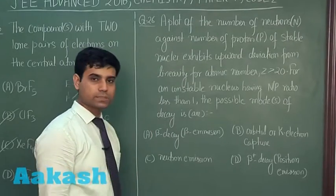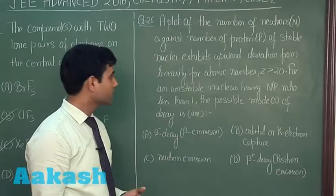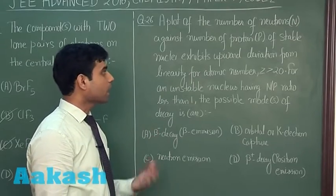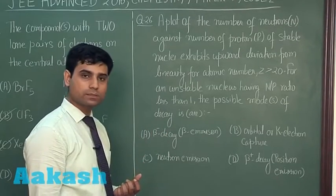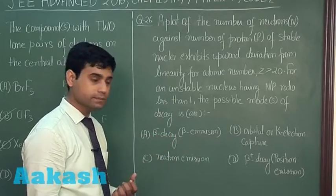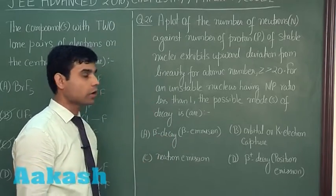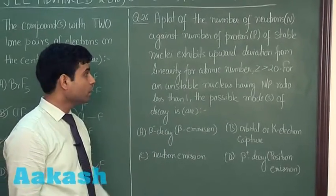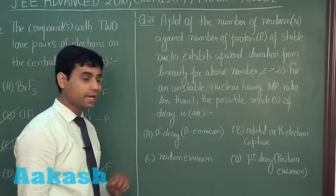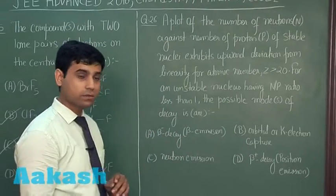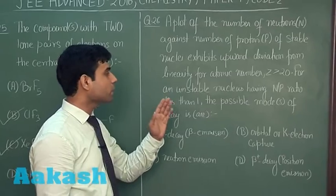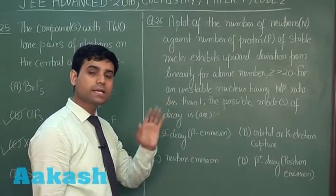Now, let us move to the next question which is question number 26. In this question, it is given a plot of the number of neutrons N against number of protons P of stable nuclei exhibits upward deviation from linearity from atomic number Z greater than 20.